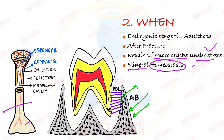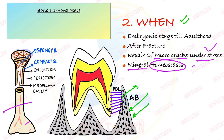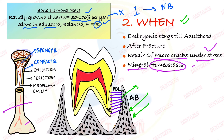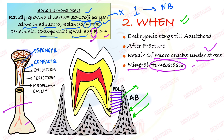What is the bone turnover rate? In young growing children, it is about 30 to 100% per year — meaning whatever bone tissue is present today in a child will be replaced by new bone within one year. In adults, it does not stop but slows down; whatever amount of bone is resorbed, an equal amount is formed to keep balance. With further increase in age and diseases like osteoporosis, resorption exceeds formation and bones become weak.